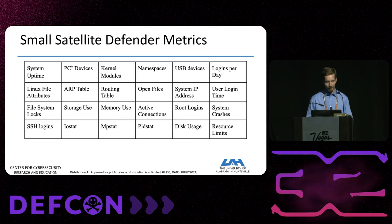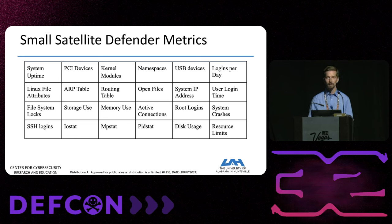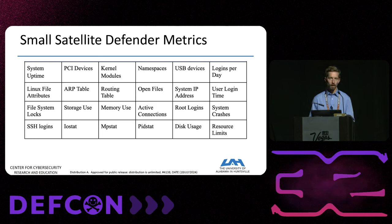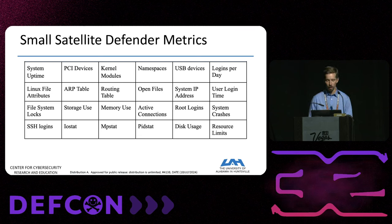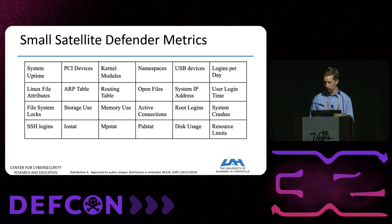Small Satellite Defender monitors a comprehensive set of metrics to create a baseline of what is normal for a satellite. Once that baseline is established, it collects information and sends anything unusual back to the ground station for the operator to further investigate and determine what may be going on.